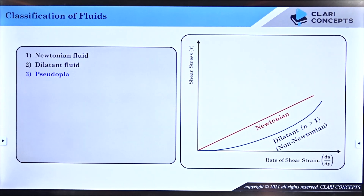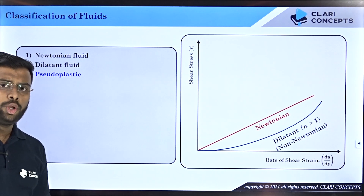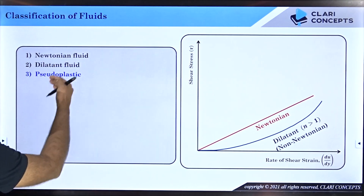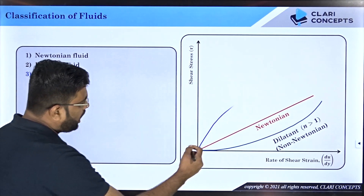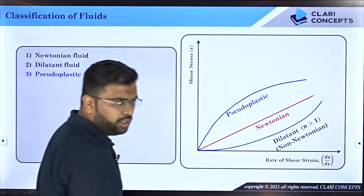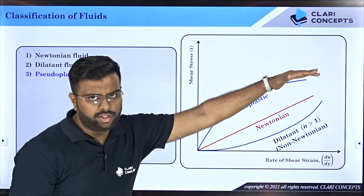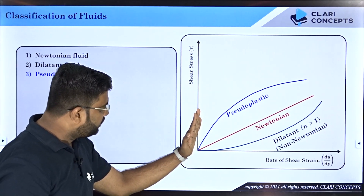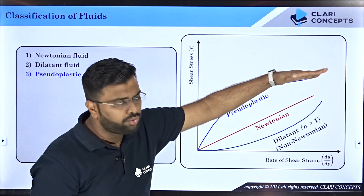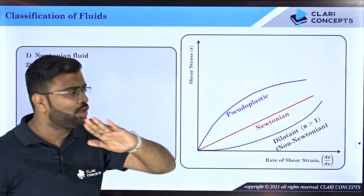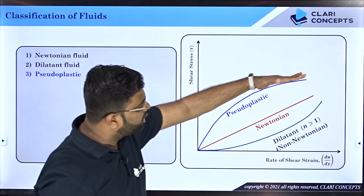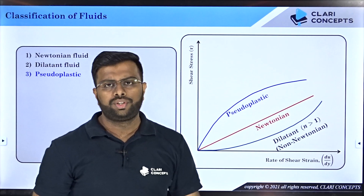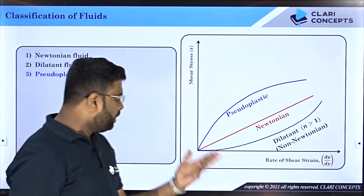Let us move ahead to another fluid type: pseudo plastic fluid. This is totally opposite to dilatant fluid. When I draw the graph, the tangent slope is constantly decreasing — the tangent becomes more and more horizontal as the rate of shear strain increases.